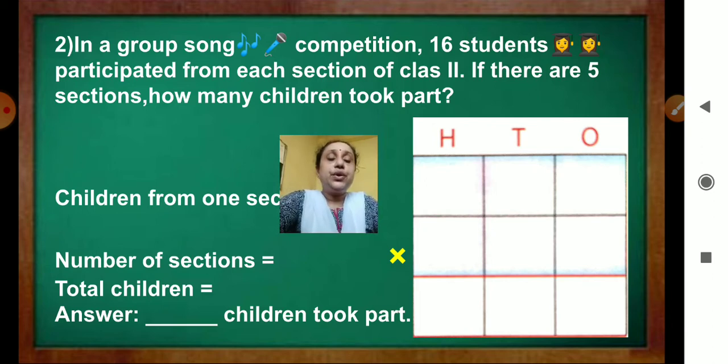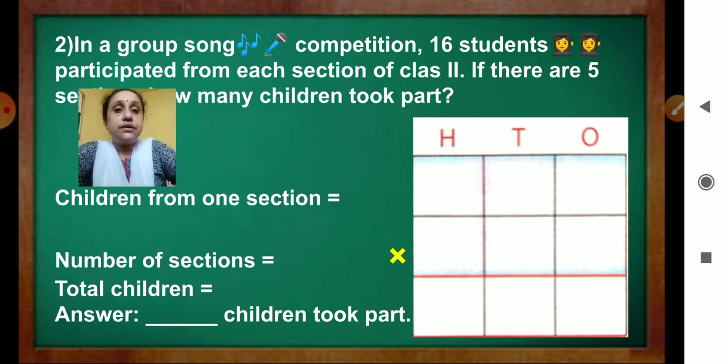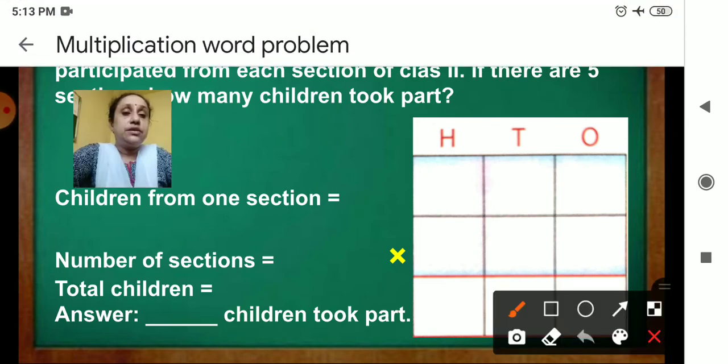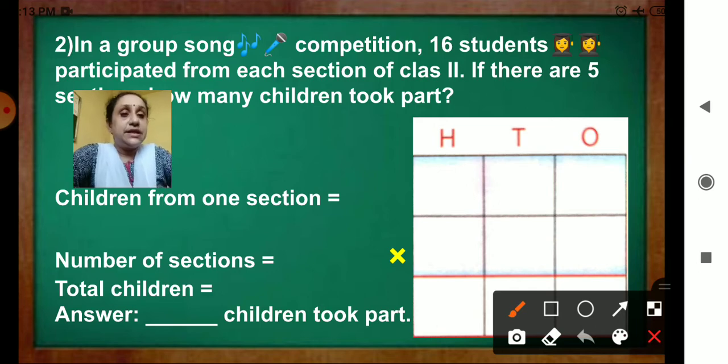Question 2. In a group song competition, 16 students participated from each section of class 2. If there are 5 sections, how many children took part? Now children from one section. How much? 16. So we will write 16.